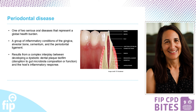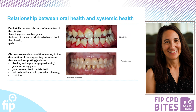Periodontal diseases result from a complex interplay between the development of a dysbiotic dental plaque biofilm and the host's inflammatory response. As the immune system responds, chronic inflammation of the gums and periodontal tissues develops. This leads to clinical signs of the disease, which include inflamed, red, swollen gums that bleed more easily. It then progresses to more tissue damage, such as breakdown of the attachment between the gums and the teeth. Broadly, plaque-induced periodontal diseases are classified into gingivitis and periodontitis.